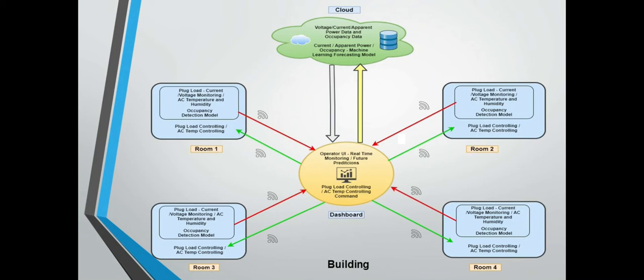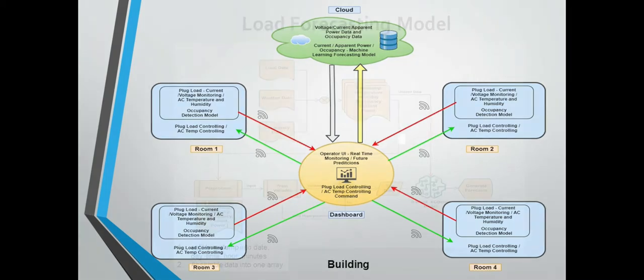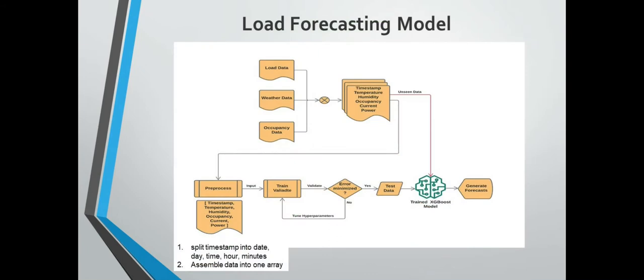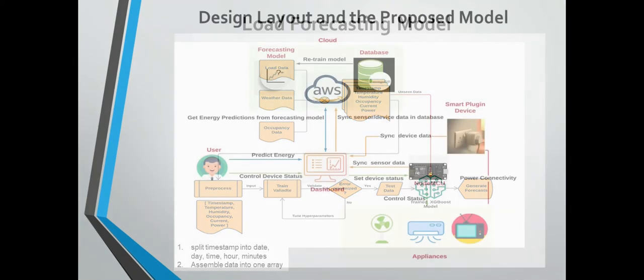By OpenWeather Map website, the real-time temperature and humidity is sent to the cloud. Our machine learning model is stored in the cloud. By the temperature, humidity, occupant number, and the timestamp with day, date, hour, and minute, the machine learning model with XGBoost algorithm will forecast the short-time load requirement of the building. After calculating the data, they are sent to the dashboard.